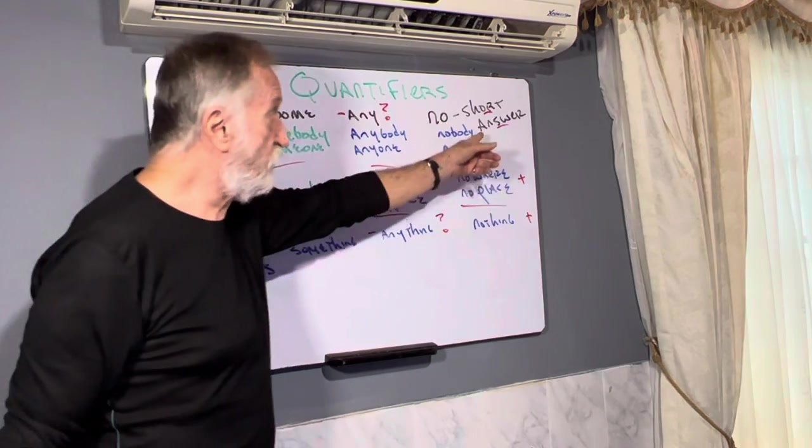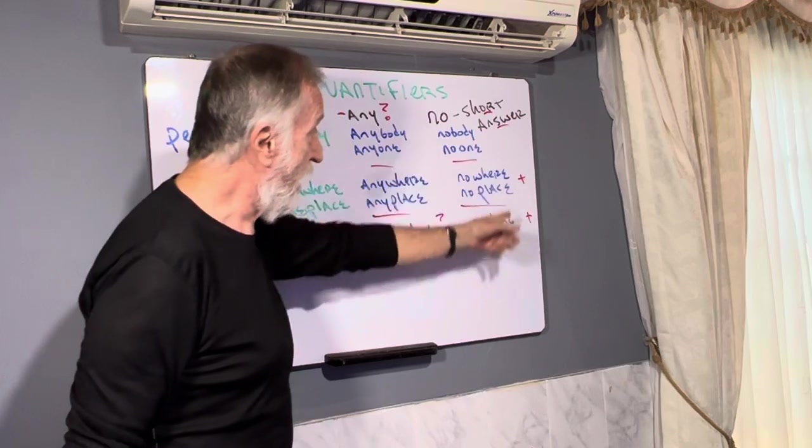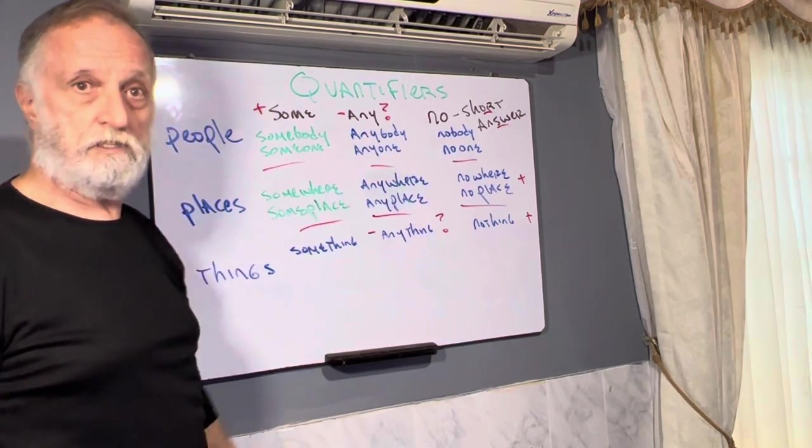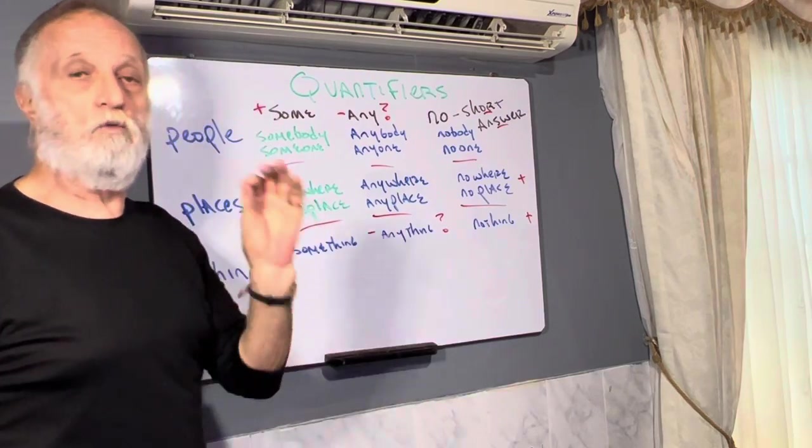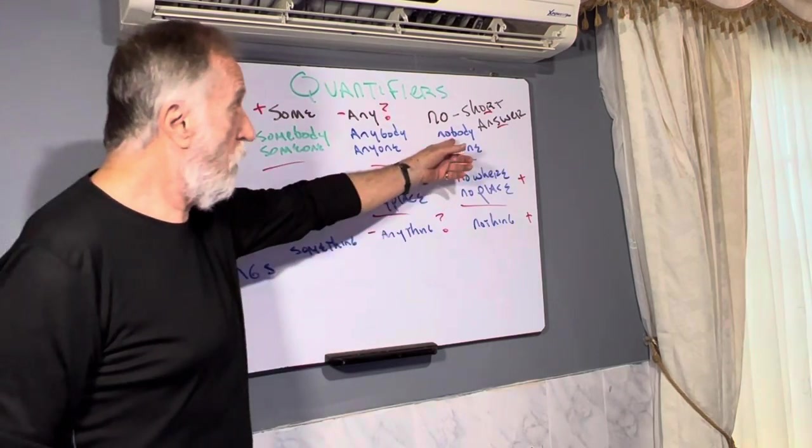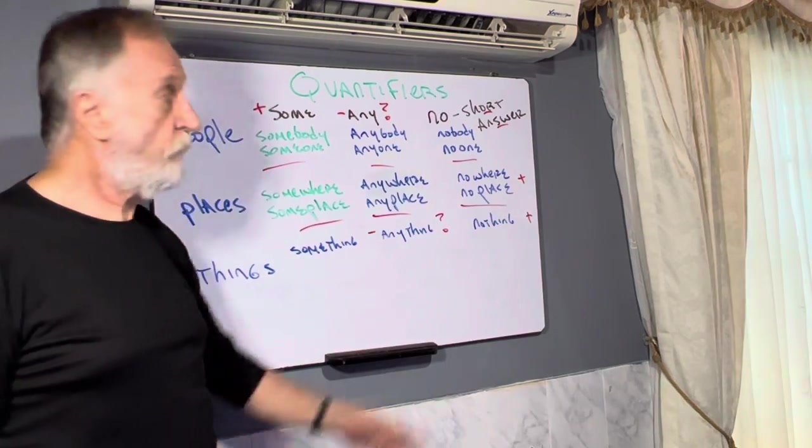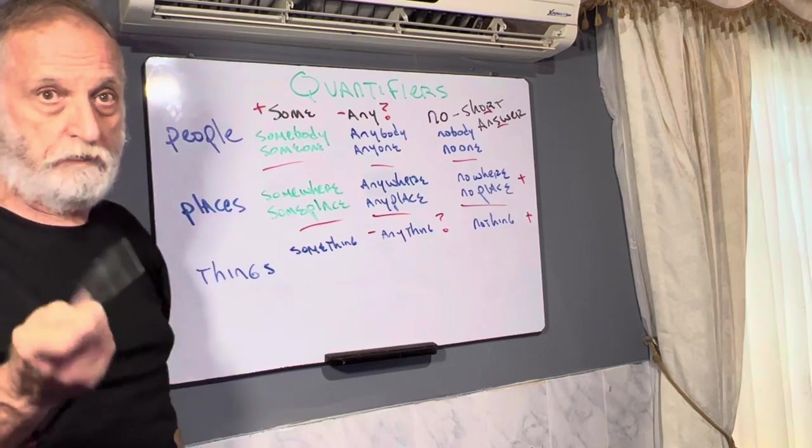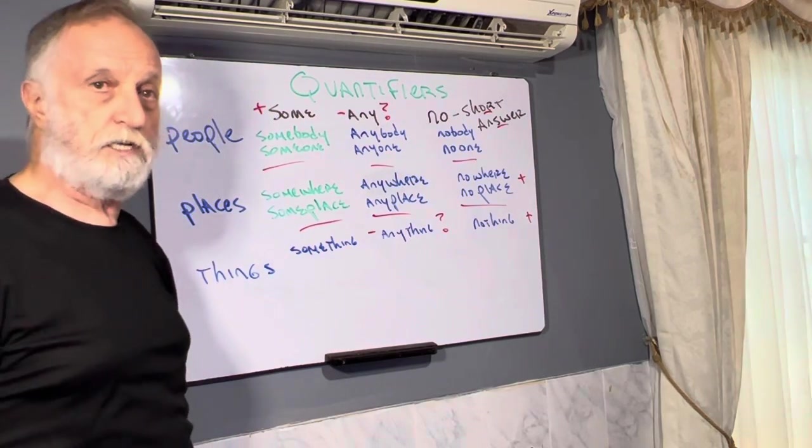This one's for affirmative answers. This is for negatives or with preguntas. I'm not with anybody. Who are you with? Nobody. Affirmatives and negatives. Remember, because that's the trampita for this. That's the secret.